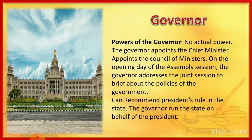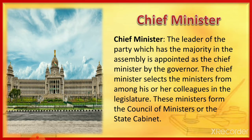The Governor has no actual executive power. The Governor appoints the Chief Minister and the Council of Ministers. On the opening day of the Assembly session, the Governor addresses the Joint Session to brief about the policies of the government. The Governor can recommend President's Rule in the state and can run the state on behalf of the President. The leader of the party with majority in the Assembly is appointed as Chief Minister by the Governor, who then selects ministers from among his or her colleagues in the legislature.